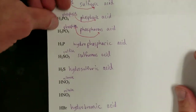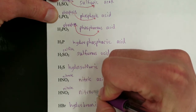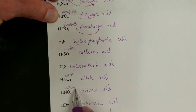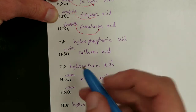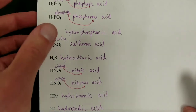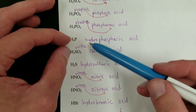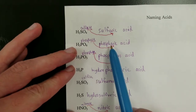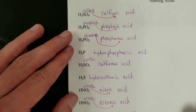Nitrate becomes nitric acid, and nitrite becomes nitrous acid. A helpful mnemonic: if you ate an acid, you would say 'ick' — so if the anion ends in '-ate,' the acid gets an '-ic' ending, and if it ends in '-ite,' the acid gets an '-ous' ending. To summarize: first confirm it's an acid, then decide whether it has oxygen or not, then apply the proper naming system.